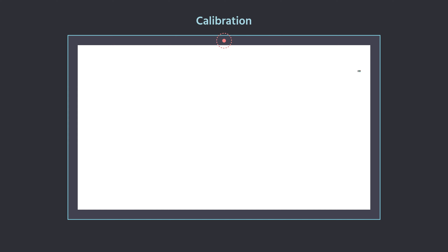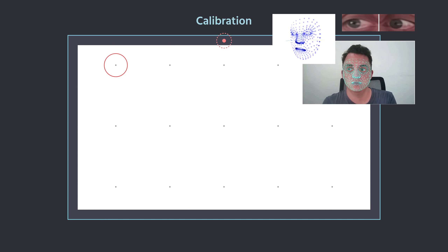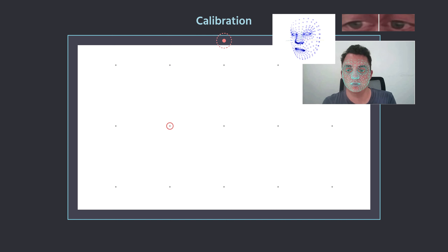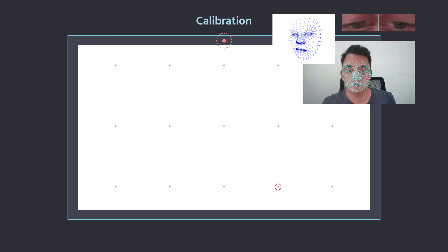During calibration, Labvanced AI identifies the participant's face then the eyes by asking the participant to fixate on a series of dots. By taking snapshots of the eyes and the head in different positions during calibration, the neural network adjusts its weights to be more user-specific thanks to this important step.